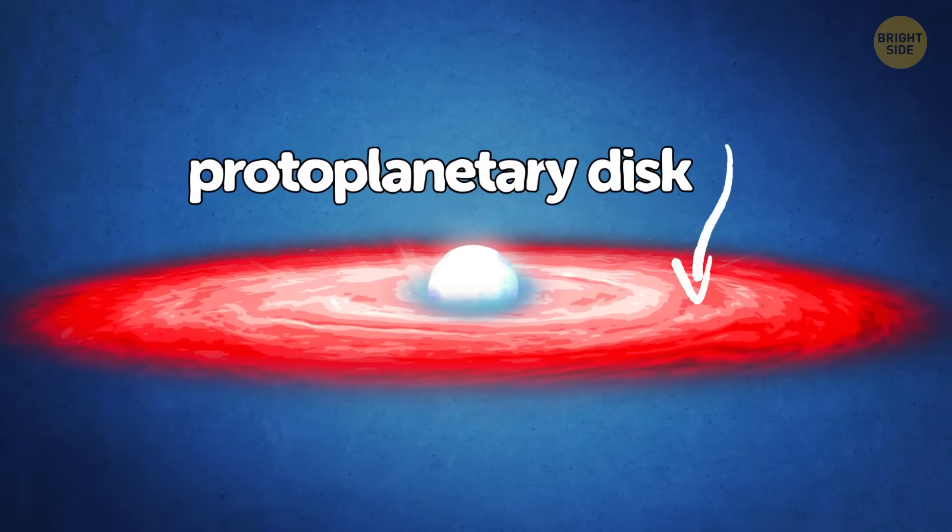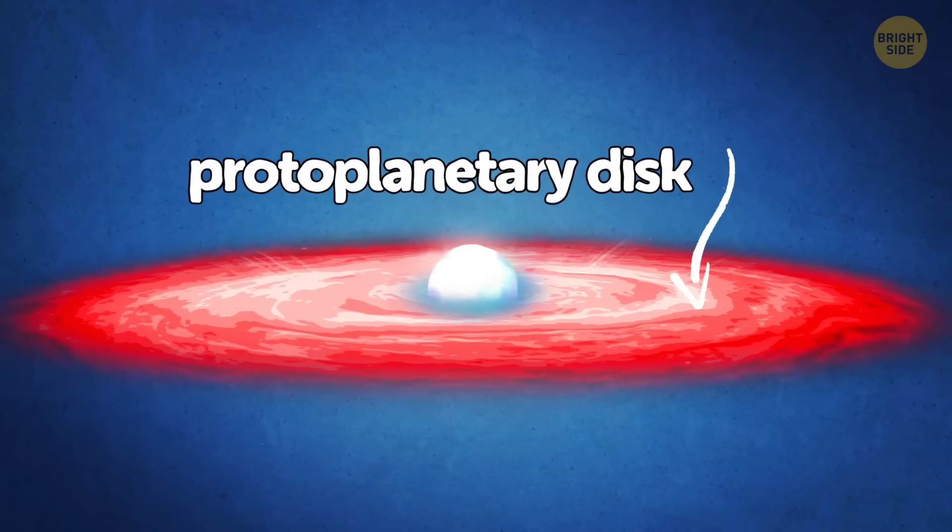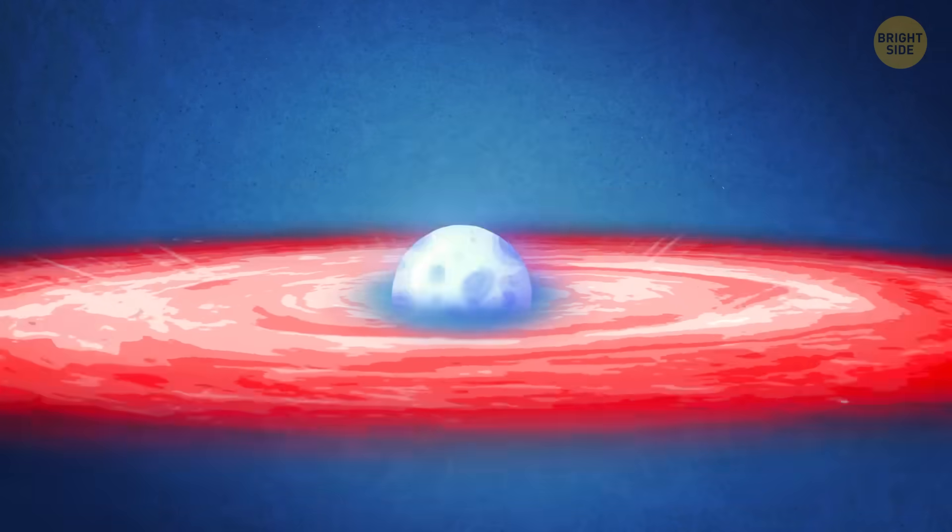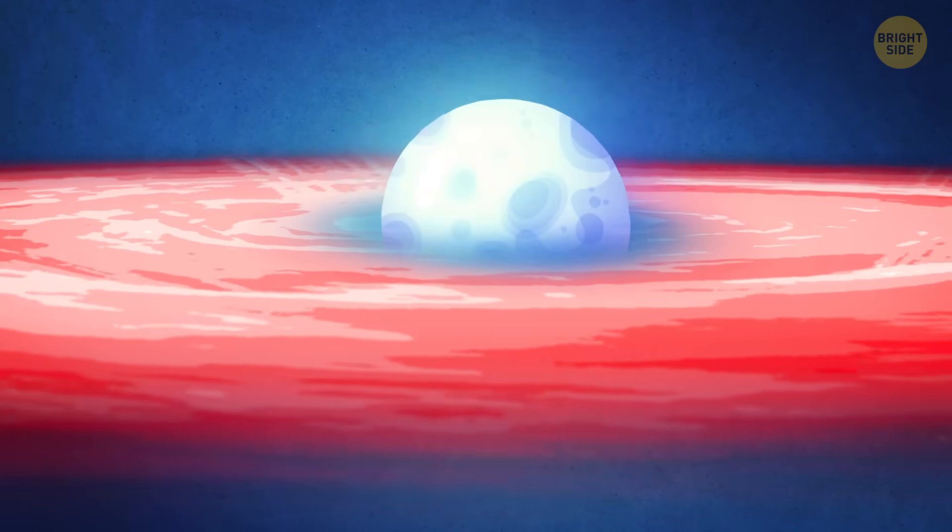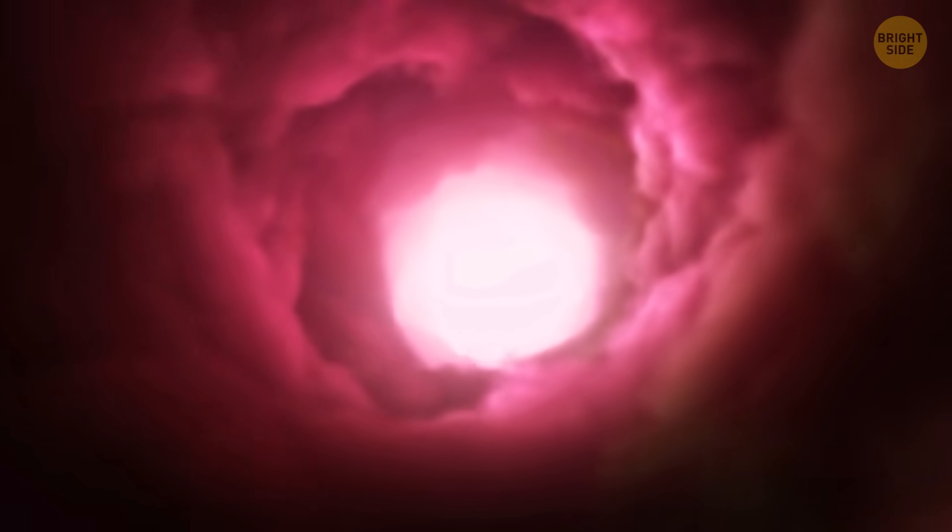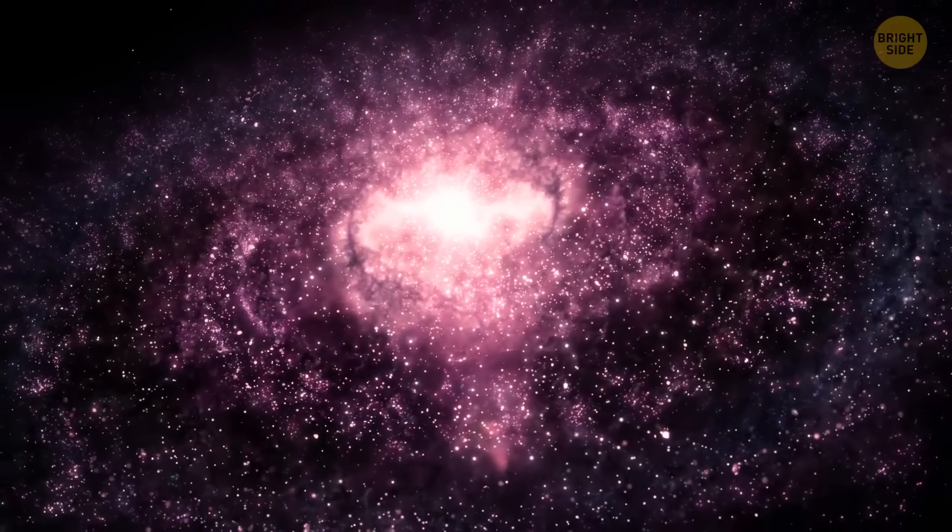And together, these dust particles create something else: a special disk called a protoplanetary disk. This disk of gas and dust is like a cozy blanket surrounding the star, and it's made up of tons of little particles with ice on it. As the dust particles bump into each other and stick together, they come together and form bigger and bigger objects.